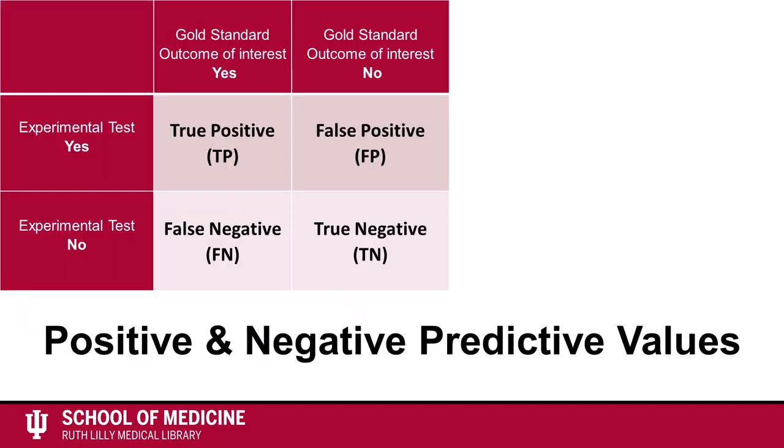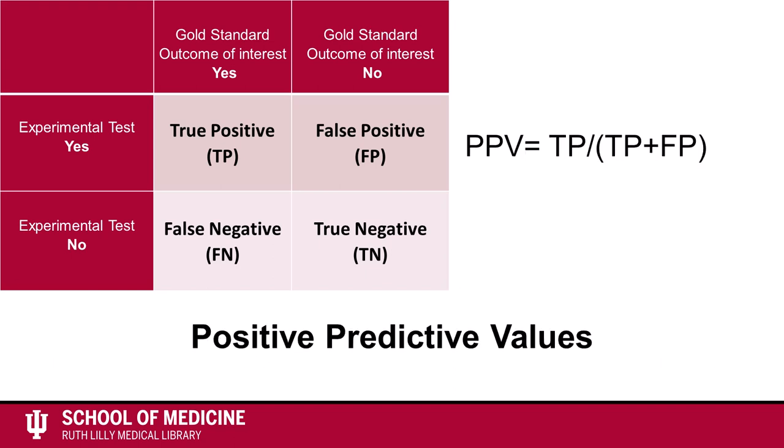Using a 2x2 table, we can calculate the positive and negative predictive values. To calculate the positive predictive value, divide the number of true positives by the number of all positive tests — so true positives divided by true positives plus false positives. Essentially, this is the percent of people who are truly positive for the outcome of interest out of all of the people who tested positive.